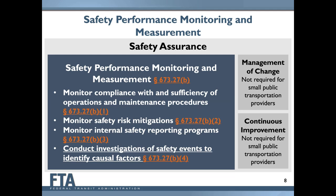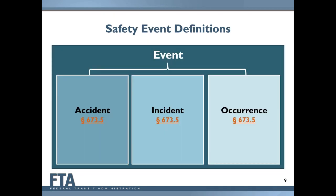Safety performance monitoring and measurement, the first element of safety assurance, includes four activities according to Part 673.27b. Those four activities are: number one, monitoring compliance with and sufficiency of operations and maintenance procedures; number two, monitoring safety risk mitigations; number three, monitoring internal safety reporting programs; and number four—the focus of today's webinar—conducting investigations of safety events to identify causal factors, per 673.27b.4.